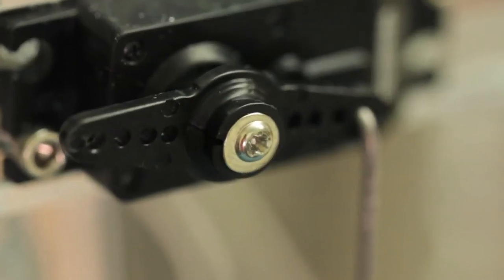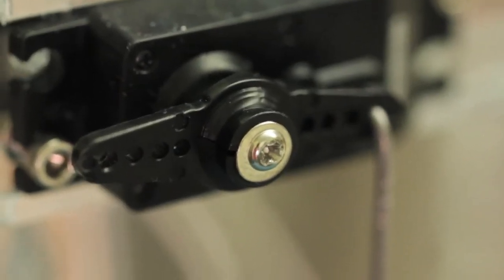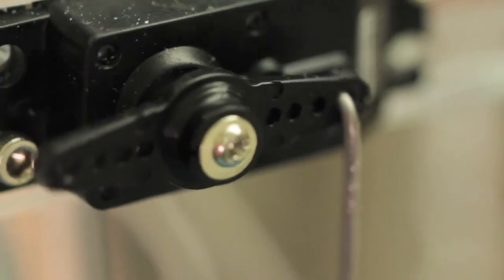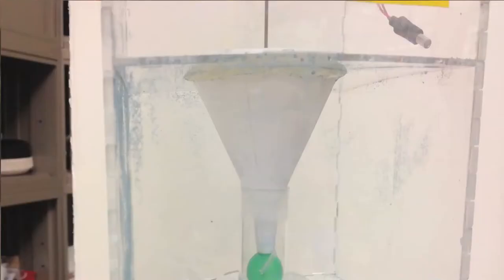It manages this by mapping pressure to the rotation of a servo arm. This arm is attached to a rigid wire with a tiny ball on one end that plugs a funnel. When the servo rotates in response to touch, the ball descends and releases a flow of sand.